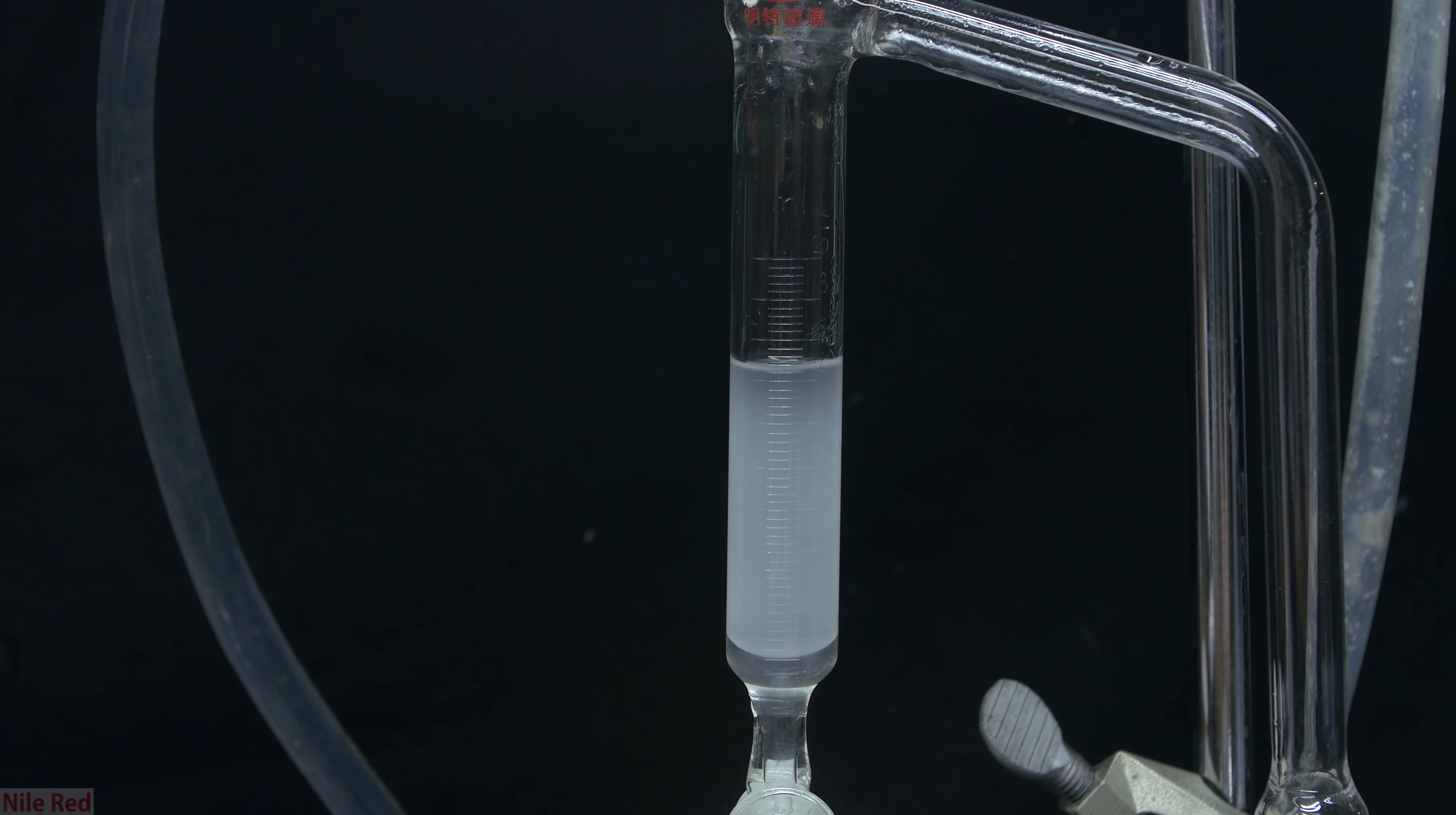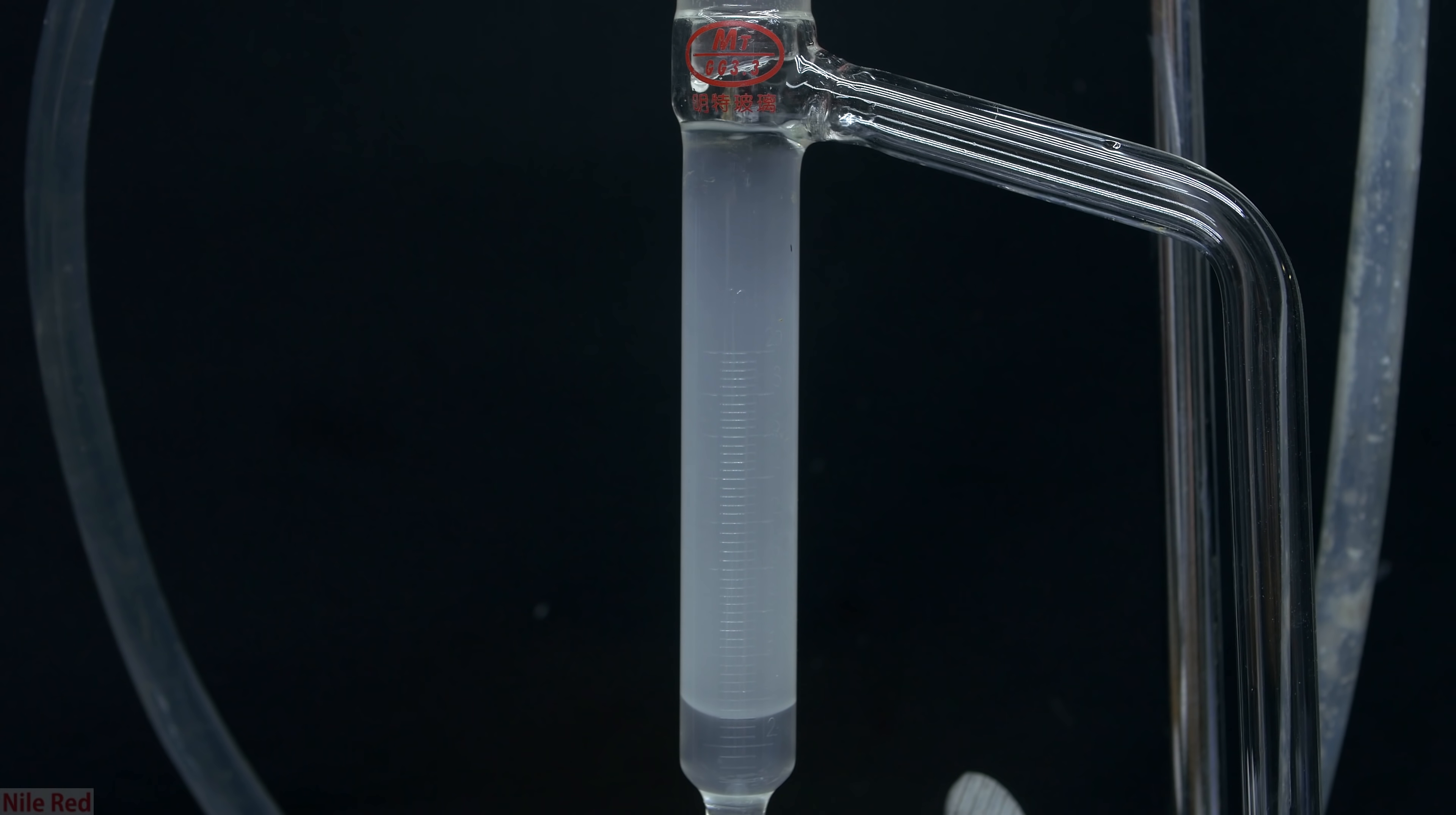As we continue to collect more, the toluene and water will separate into layers, where the water's on bottom and the toluene's on top. If we look closely, every so often, we can see a little bit of water sinking from the top to the bottom. So ideally what's happening is the water is sinking to the bottom, but the toluene is falling back into the flask.